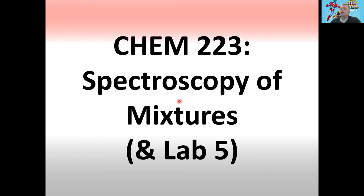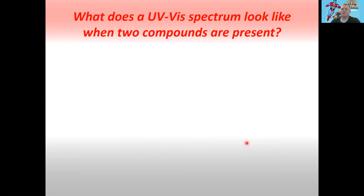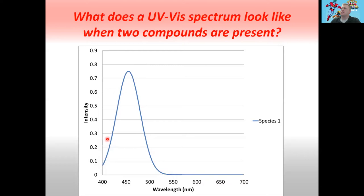And we'll talk about how to extract unknown concentrations when you have overlapping signal. Let's start by throwing up the spectrum for one species. So this is the UV-Vis absorption spectrum for one species — we'll call it species one, this is just a made-up species. On the x-axis I have the wavelength in nanometers, and on the y-axis I have our intensity in arbitrary units. This would be what the absorption spectrum of a single species looks like.